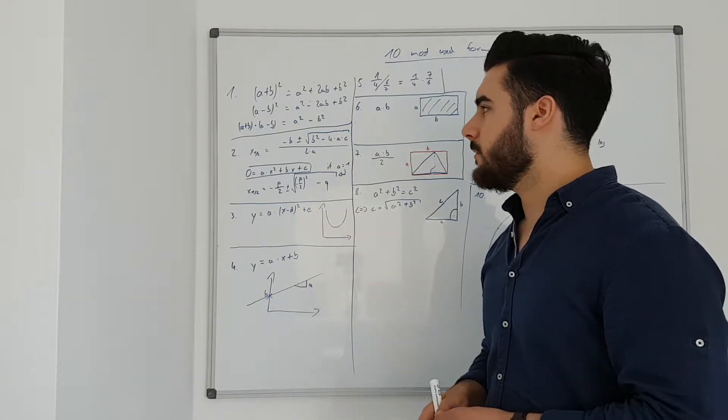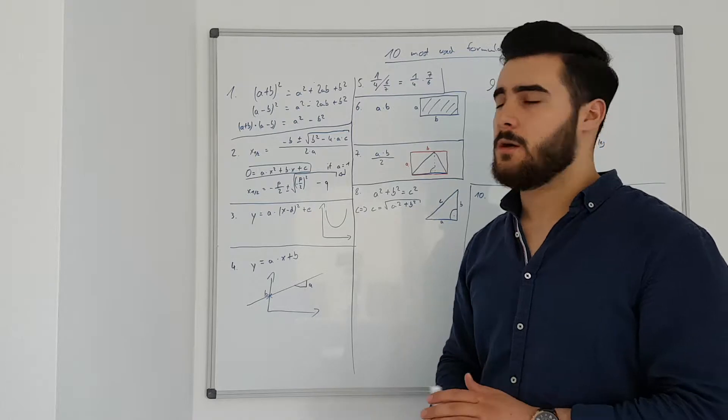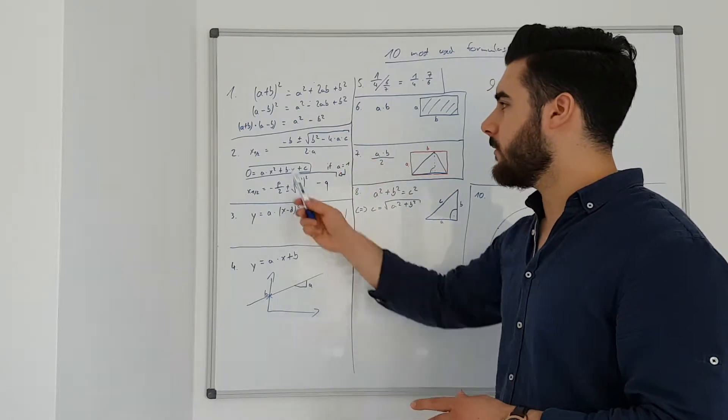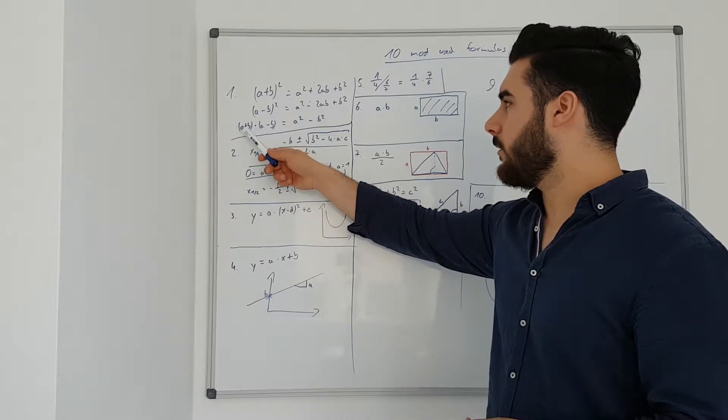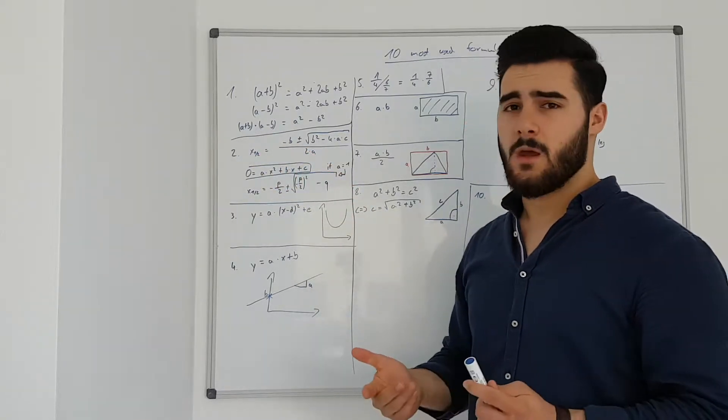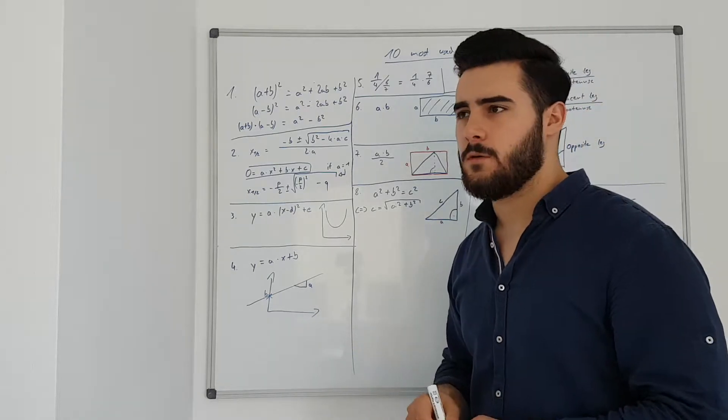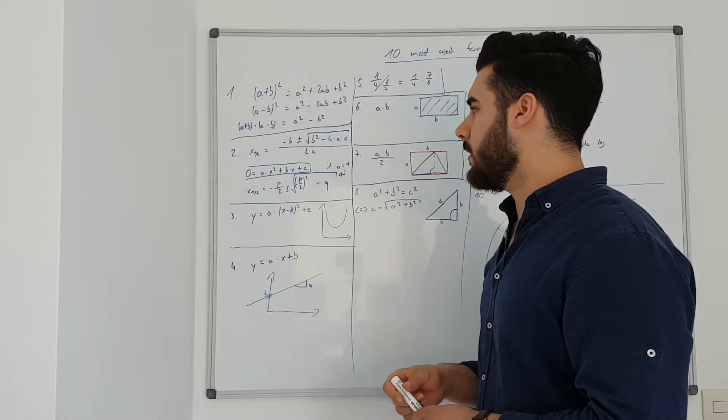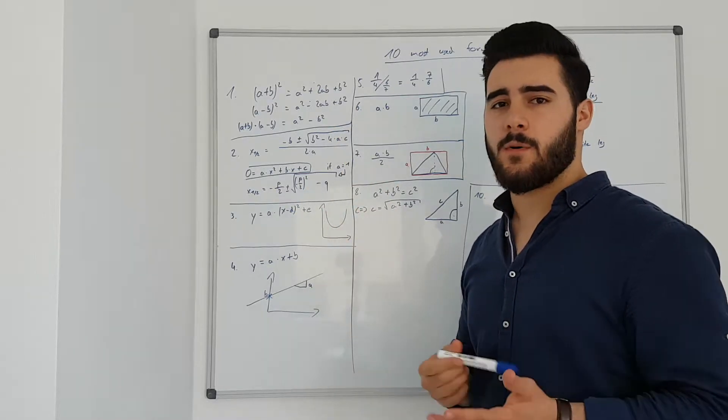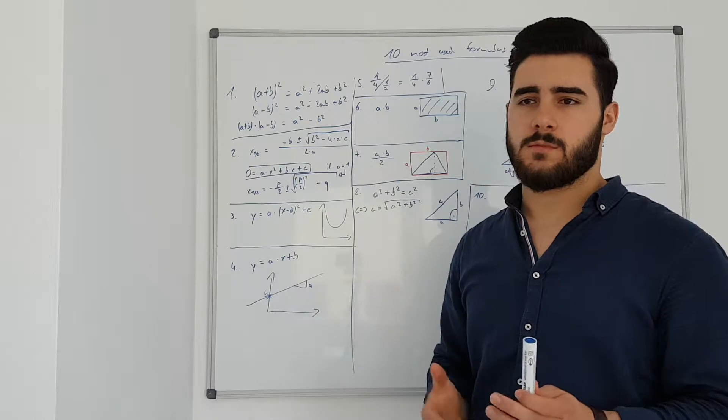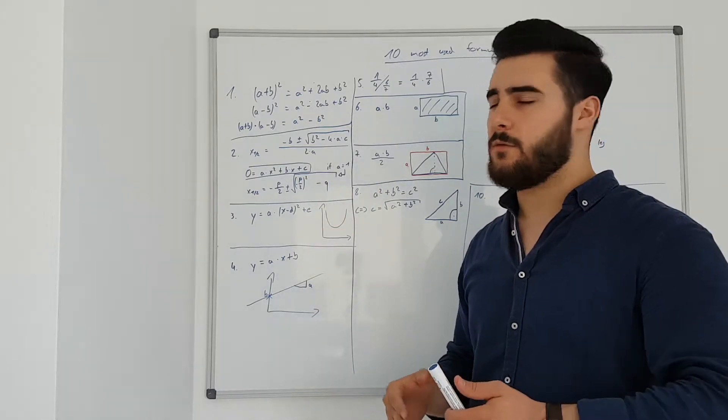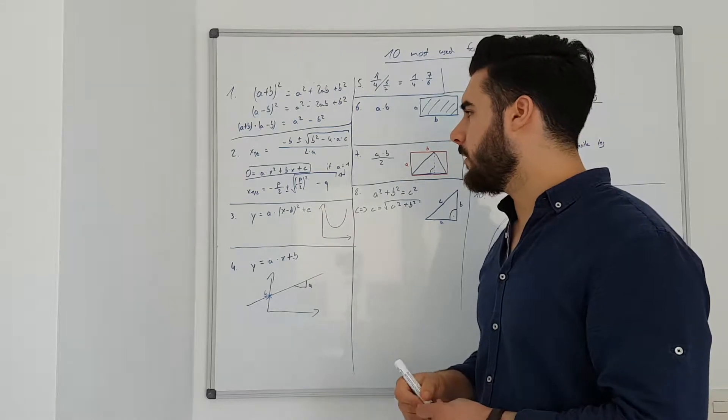And in the third case just remember that this 2ab cancels out because of the different signs used in a combination. The second probably most known formula is the ABC formula or the PQ formula. Depends on where you live, it depends on your school. Some of you might have learned the ABC formula from the beginning, some of you might have used the PQ formula from the beginning.